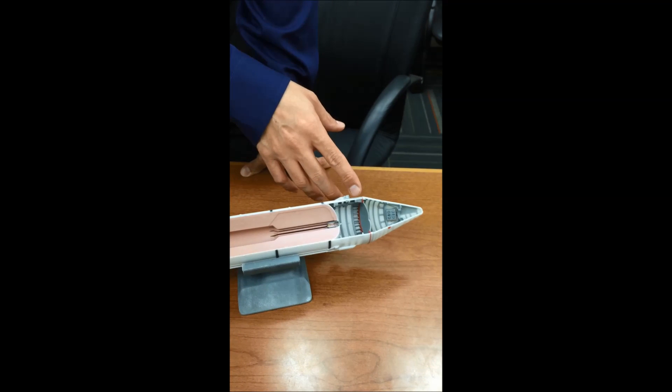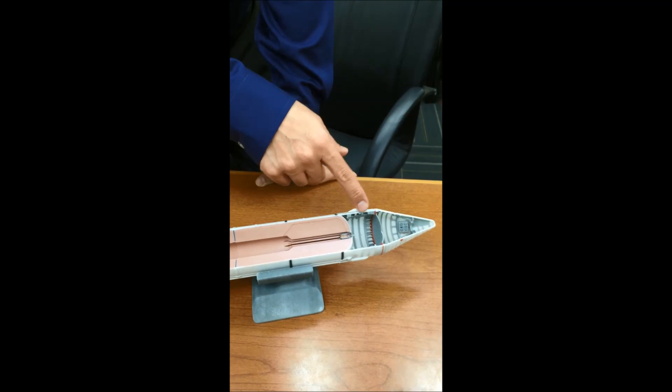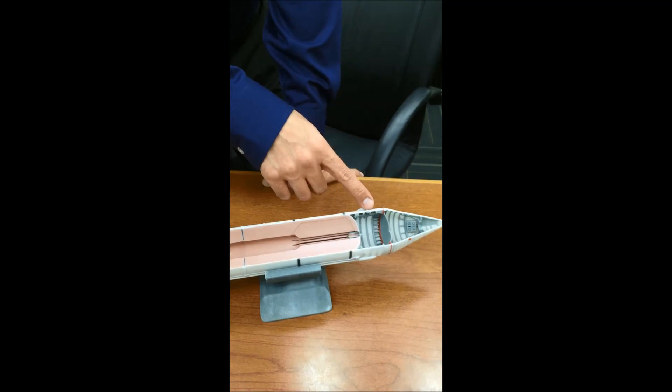Here's the nose cone, and this is what we call the forward skirt. Inside this forward skirt will be all sorts of avionics boxes, the control systems for this booster, as well as integration to the core stage of the vehicle.